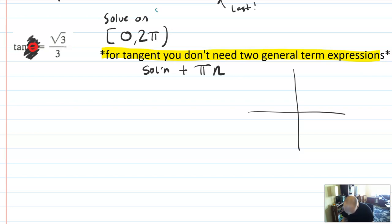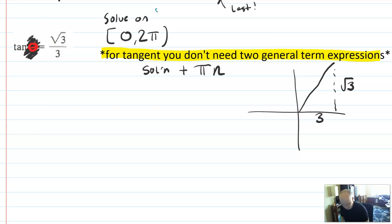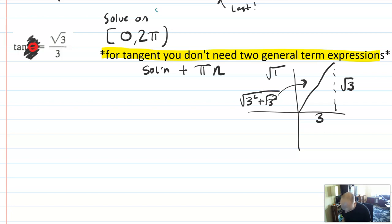Opposite is root 3, adjacent is 3 — this is a bad drawing, not to scale. If you don't immediately recognize this off your unit circle, try the Pythagorean theorem: root 3 squared plus root 3 squared gives root 12, which reduces to 2 root 3.